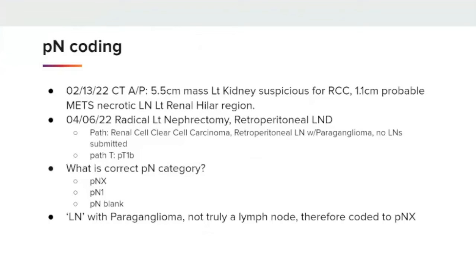An additional example for PN coding. A mass was found on CT suspicious for renal cell carcinoma. There was also a 1.1 centimeter probable metastatic necrotic lymph node of the left renal hilar region. At the time of surgery, they did a radical left nephrectomy with retroperitoneal lymph node dissection. The pathology report findings were renal cell clear cell carcinoma, and that retroperitoneal lymph node was positive as a paraganglioma. No lymph nodes were submitted; path T was reported as pT1B. The correct PN category would be PNX, as no actual regional lymph nodes were assessed. The lymph node with paraganglioma was not truly a lymph node, so it is coded as PNX.